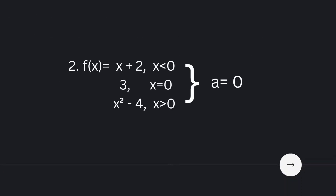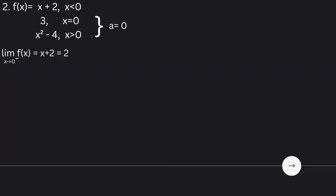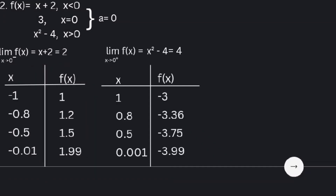Number 2. The function f of x is equal to x plus 2 if x is less than 0, and 3 if x is equal to 0, and x squared minus 4 if x is greater than 0, with a equal to 0. We have two tables: the table from the left and the table from the right. The limit of f of x as x approaches 0 from the left is x plus 2, which is equal to 2.